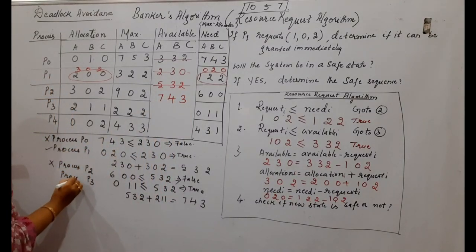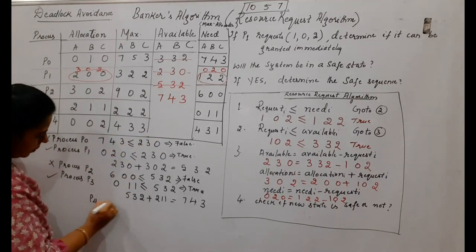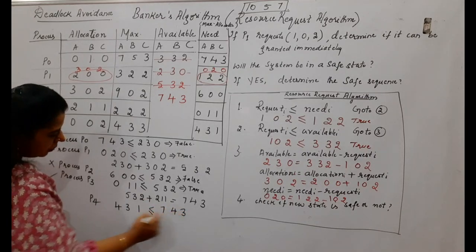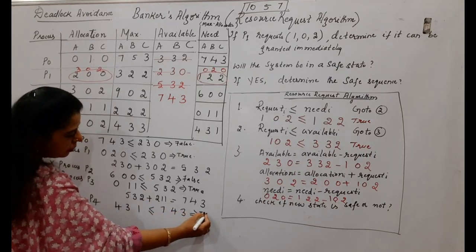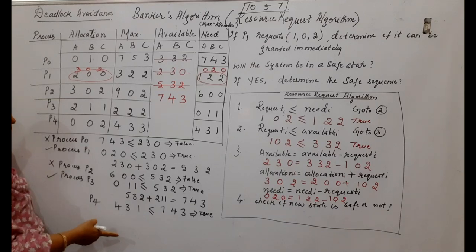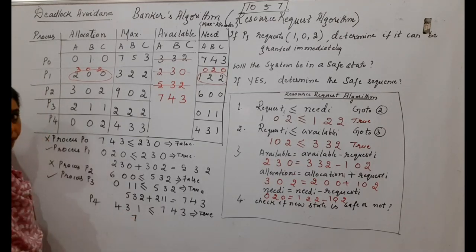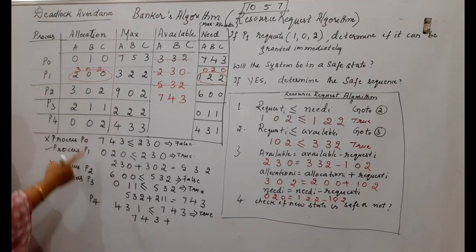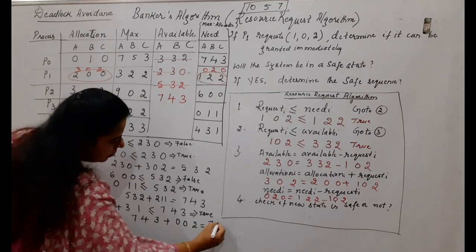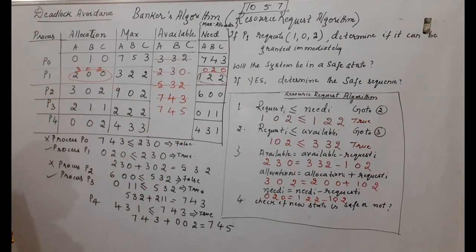Check P4: need is 4,3,1 — is it ≤ available 7,4,3? Yes, it is true. P4 uses those resources and returns its allocation 0,0,2. New available: 7,4,3 plus 0,0,2 equals 7,4,5. Update available to 7,4,5. P4 has completed.